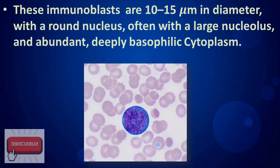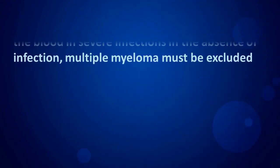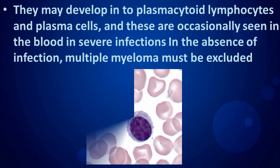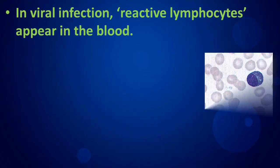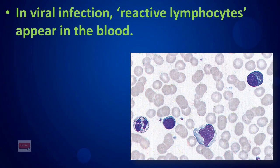These immunoblasts are 10 to 15 micrometers in diameter, with a round nucleus, often with a large nucleolus, and abundant deeply basophilic cytoplasm. They may develop into plasmacytoid lymphocytes and plasma cells, which are occasionally seen in the blood in severe infections. In the absence of infection, multiple myeloma must be excluded. In viral infection, reactive lymphocytes appear in the blood.